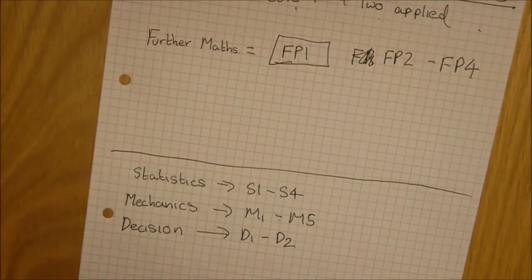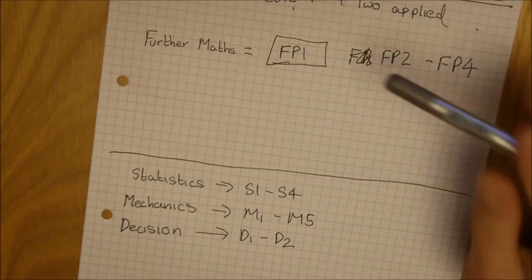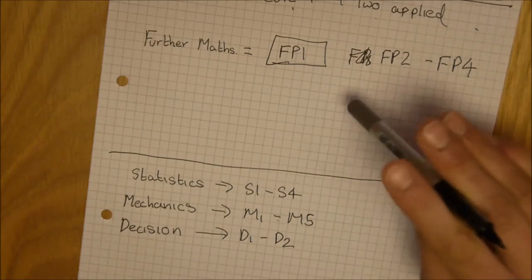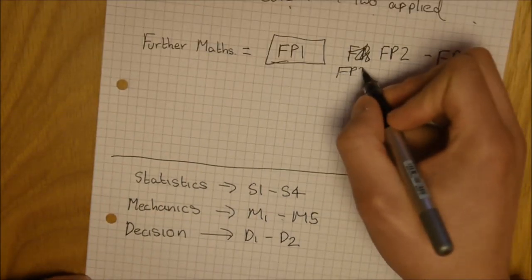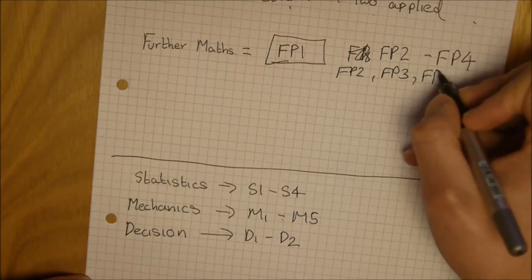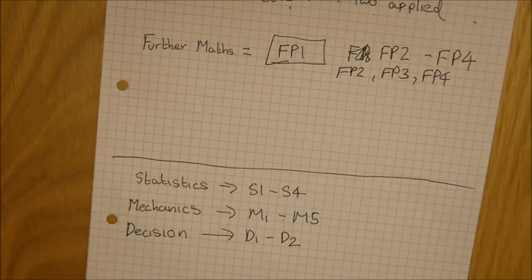Now further maths is a bit of a mad one, really. The only module that is traditionally compulsory is FP1. For your proper A-level, you must take another further pure unit, but that can be obviously FP2, FP3, or FP4. So you only have to take two further pure modules to do your further maths A-level.